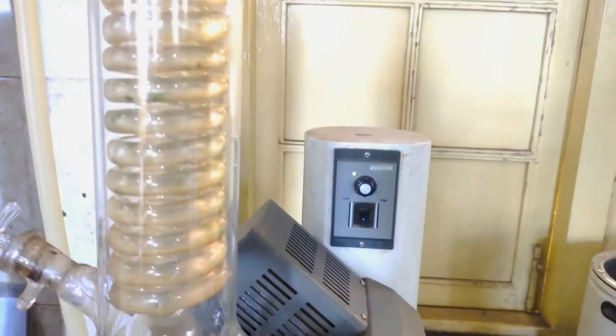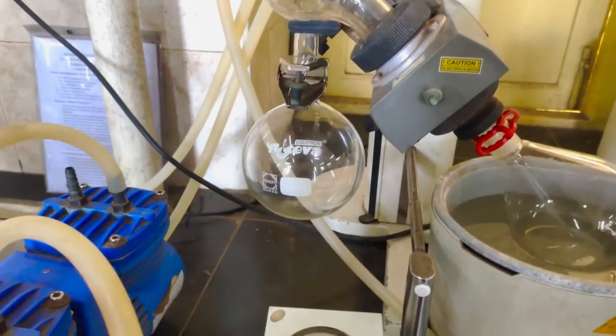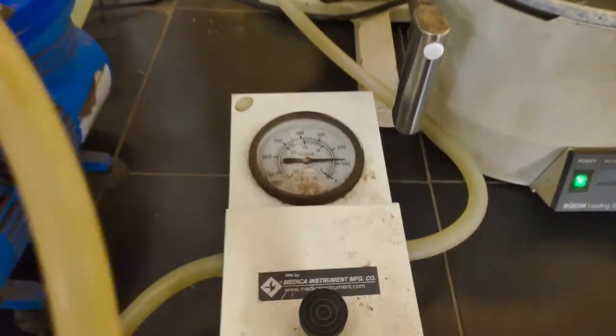The vapors of the solvent reach the spiral column and condense due to the water circulation inside the spiral column, and are collected in the round bottom flask.